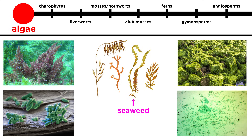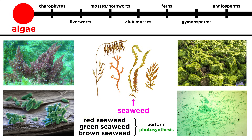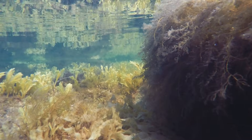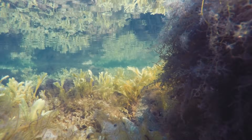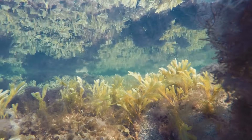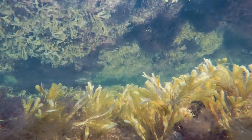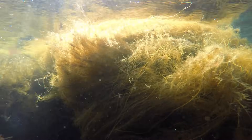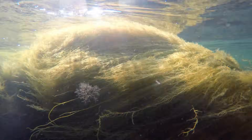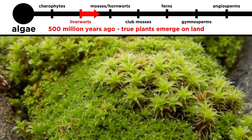Seaweeds and kelps are another story. There are three different groups of seaweed — red, green, and brown — and they are all capable of photosynthesis. These organisms can also be referred to as macroalgae, so they're still not technically plants. But if you look at a seaweed, it has blades that look like leaves, a stipe that looks like a stem, and holdfasts that look like roots. So due to these and many other morphological and genetic similarities, we can see that certain kinds of algae must be the ancestors of the land plants we're more familiar with, and it is the case that true plants started to develop on land around 500 million years ago.